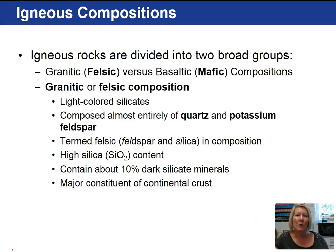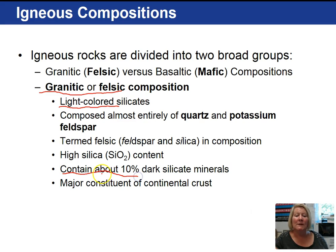Looking at the two broad groups of igneous rocks: granitic or felsic versus basaltic or mafic compositions. The granitic or felsic compositions contain non-ferromagnesian silicate minerals such as quartz and potassium feldspar. It has a high silica content — SiO2, silicon dioxide — in excess of 70% silica, very little dark silicate minerals (about 10%). Granitic composition is the composition of the continental crust.